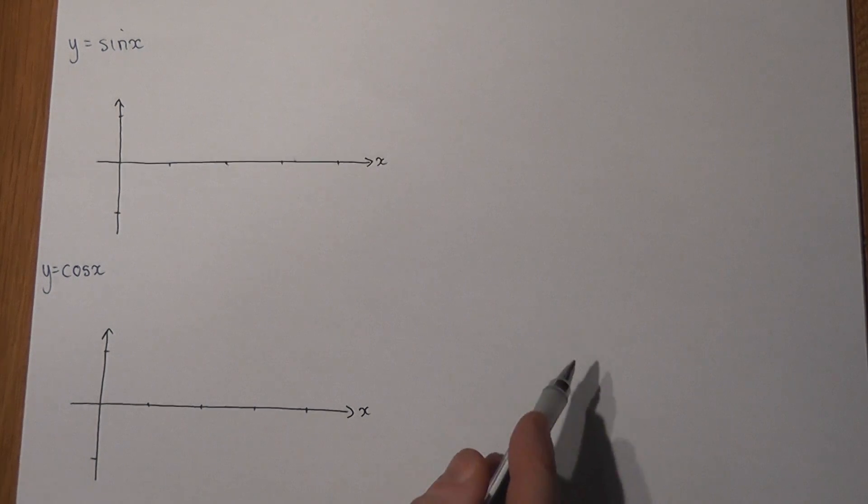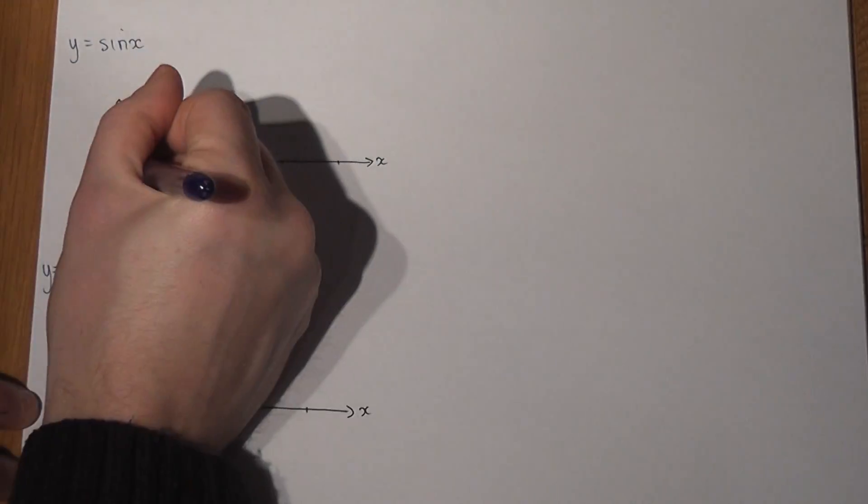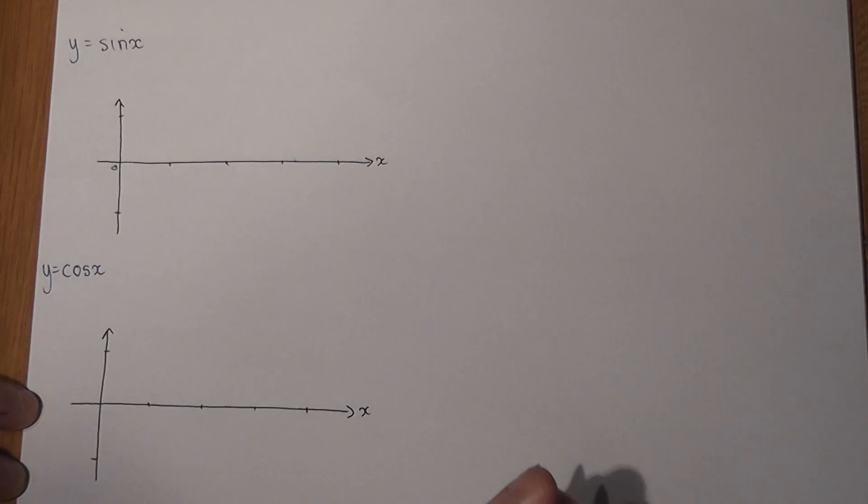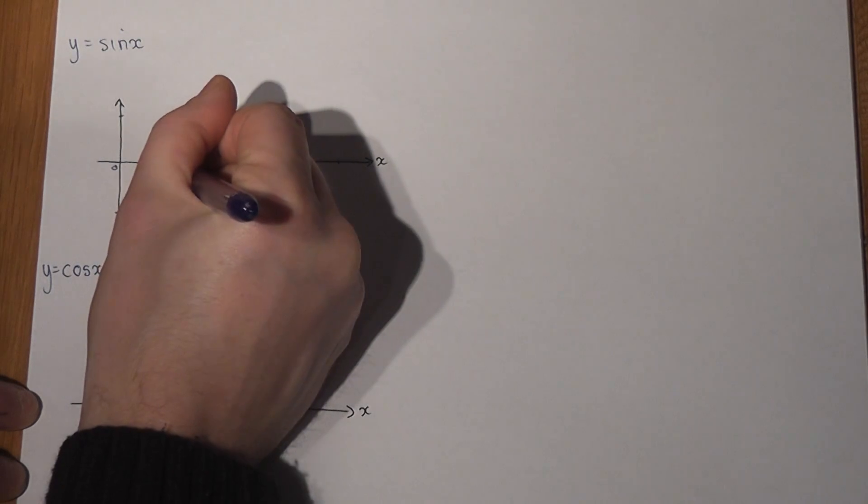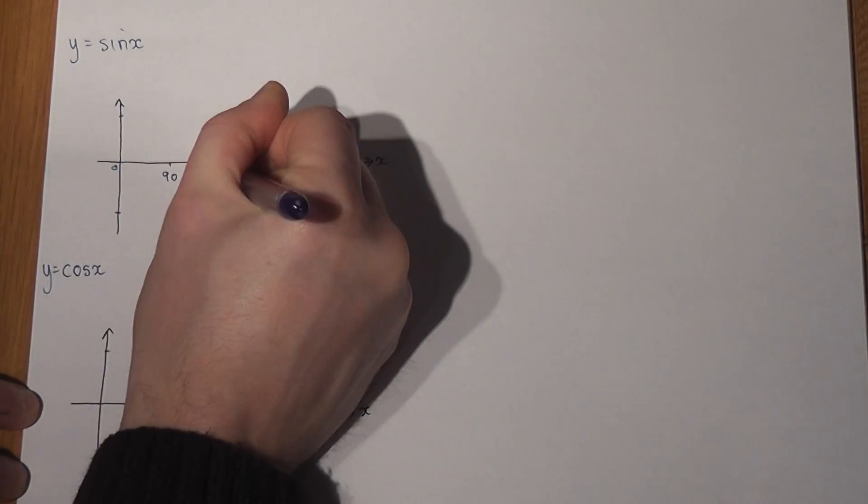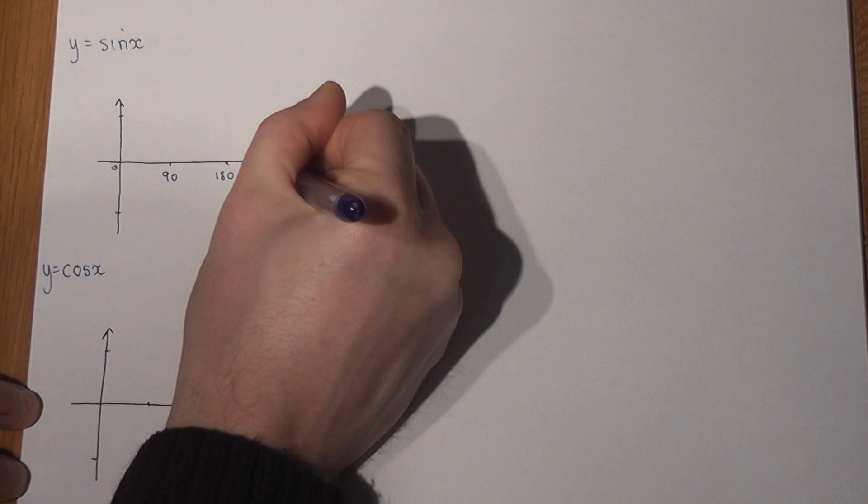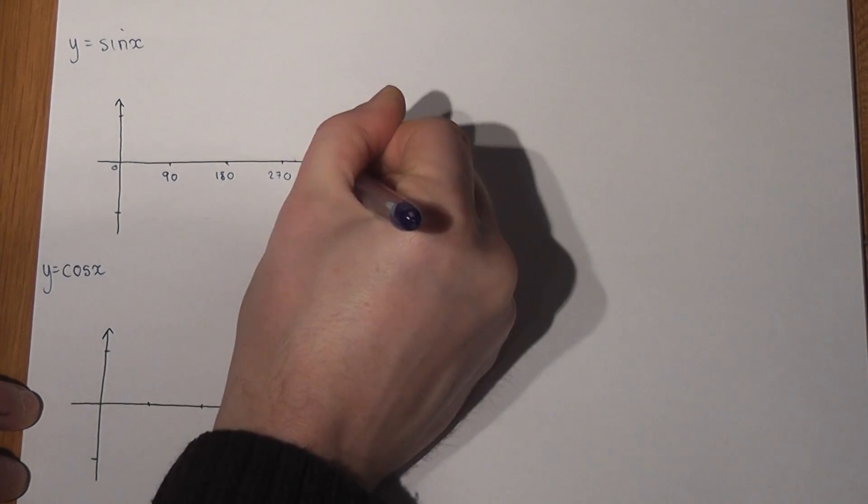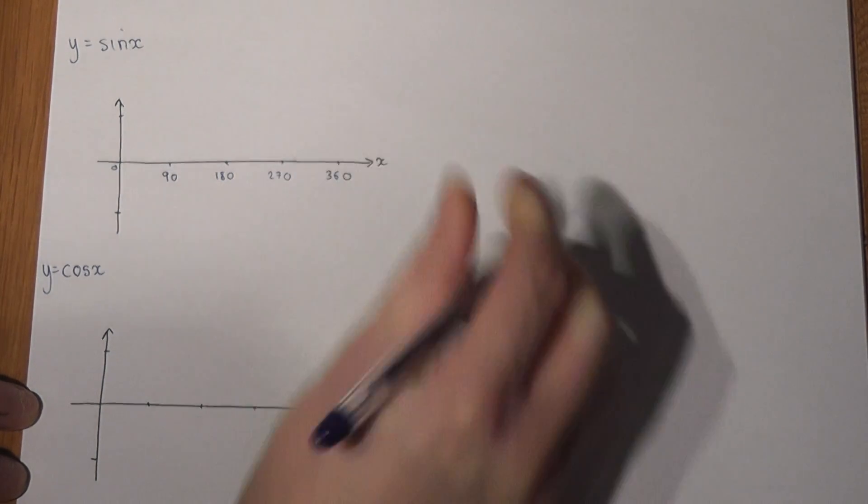Now then, sine and cos link to angles, and on both of these graphs we go from 0 to 360 on the x-axis: 0, 90, 180, 270, and 360.